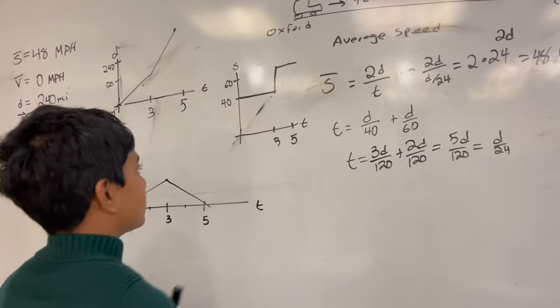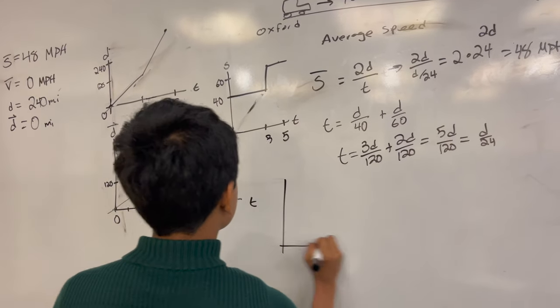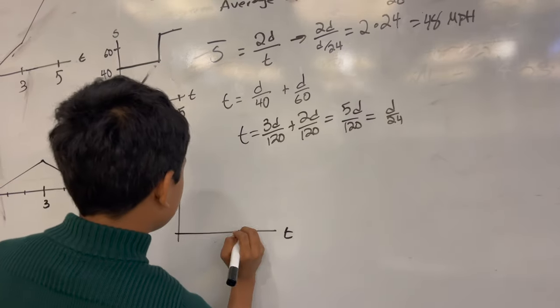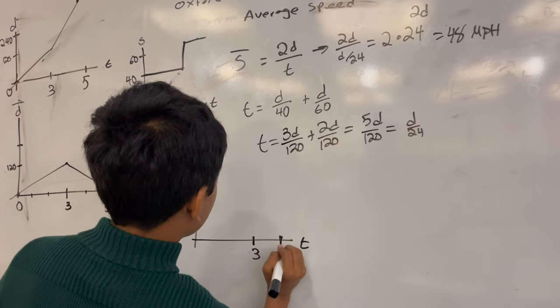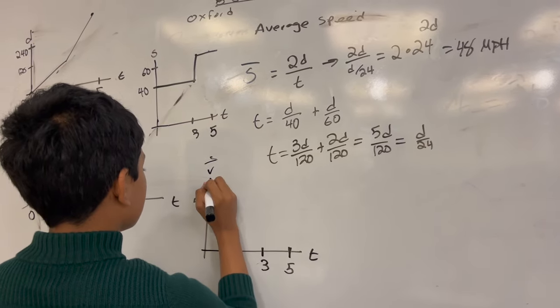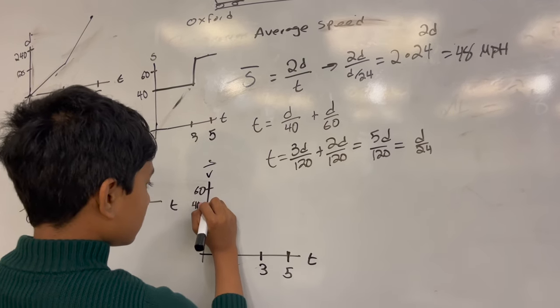Yeah, there is nothing wrong to that. Alright, VT graph. Okay. 5, and 40, 60. I'm sorry, what? 40, 60.